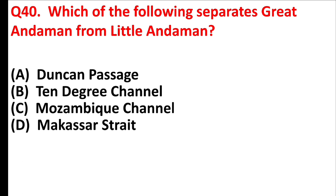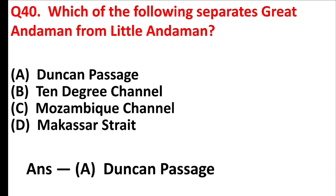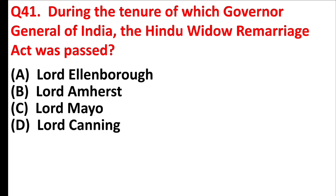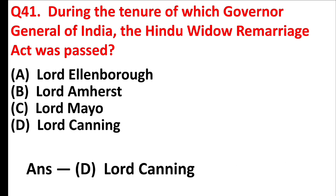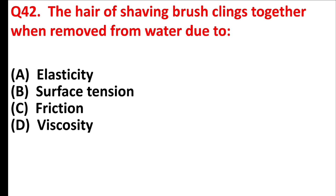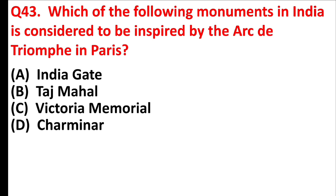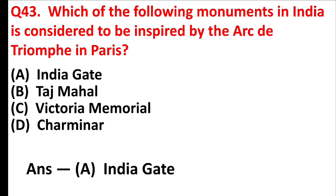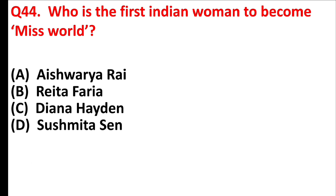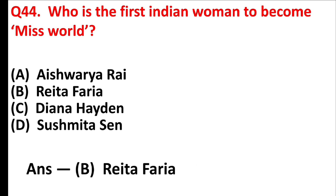Which of the following separates Great Andaman from Little Andaman? Answer is Option A: Duncan Passage. During the tenure of which Governor General of India was the Hindu Widow Remarriage Act passed? Answer is Option A: Lord Canning. The hair of a shaving brush clings together when removed from water due to Answer is Option B: Surface tension. Which monument in India is considered to be inspired by the Arc de Triomphe in Paris? Answer is Option A: India Gate. Who is the first Indian woman to become Miss World? Answer is Option B: Rita Faria.